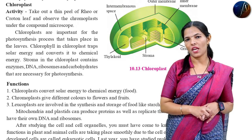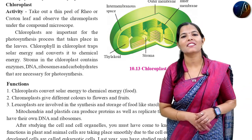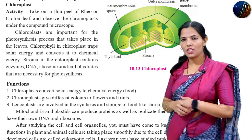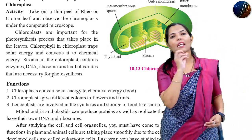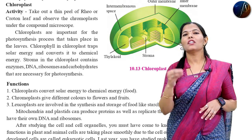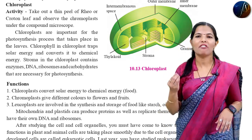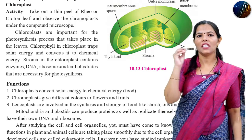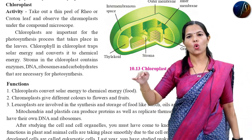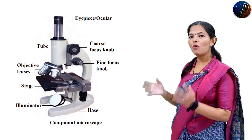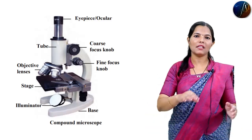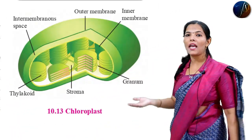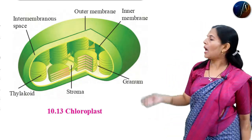What is chloroplast? You have seen a diagram in 10.13. You have seen two categories: Croton and Rio. Then what you have to do is take out the thin peel of Rio and Croton leaves and observe the chromoplast under the compound microscope. You have seen the chloroplast structure in diagram 10.13.